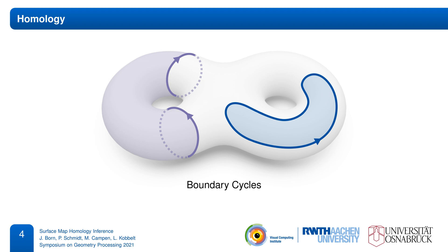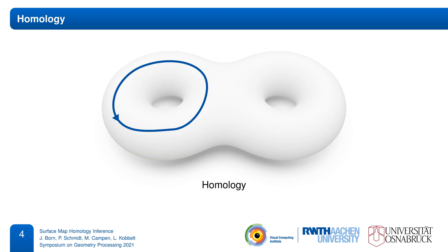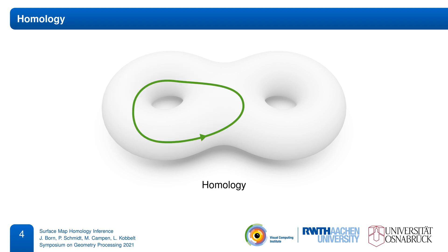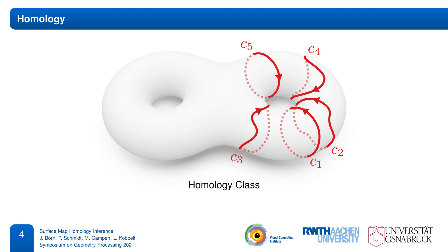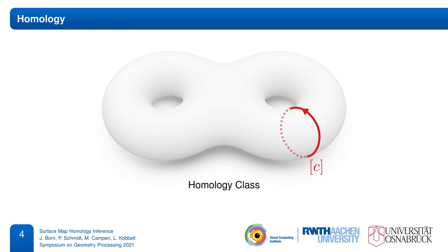Others just enclose some region of the surface. These are called boundary cycles, and we use them to define homology. If you can take one cycle and modify it by adding only boundary cycles to obtain another one, then we say that those two cycles are homologous. Under this relation, each cycle is part of some equivalence class of mutually homologous cycles, called a homology class. We illustrate homology classes by showing one cycle that acts as a representative.